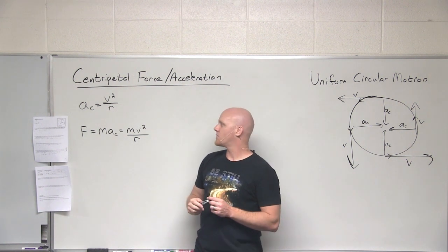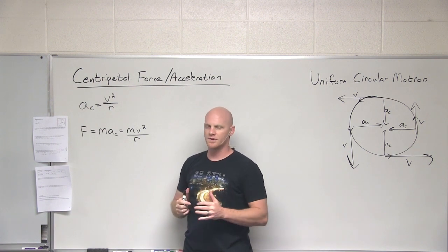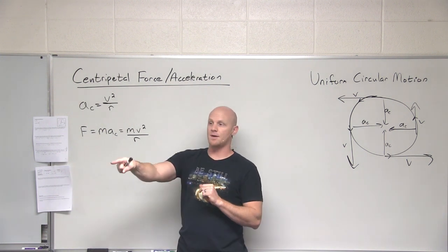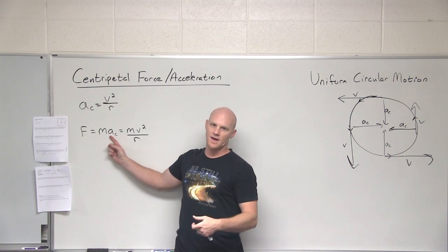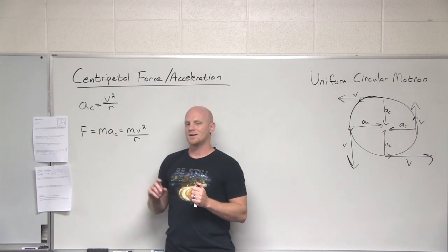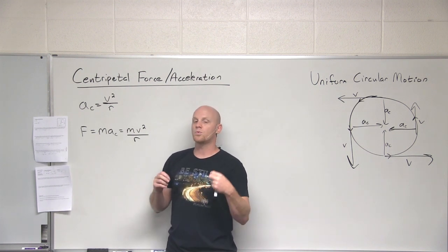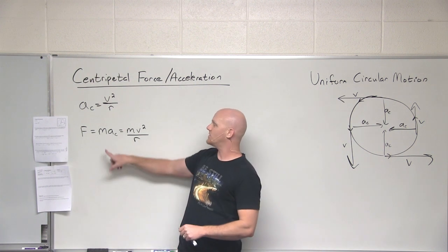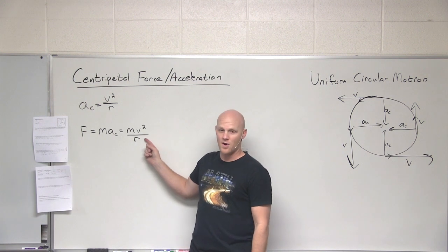If you guys recall, whenever I'm doing a free body diagram and I set up the sum of the forces in any one direction, the sum of those forces always add up to what? Always the MA. If there's no acceleration, then they would add up to zero, but they always add up to MA. Well, here's the deal. Now, when we do free body diagrams for uniform circular motion, for the radial direction, the direction that's to and away from the center of the circle, the sum of the forces still add up to MA, where MA is now MV squared over R.